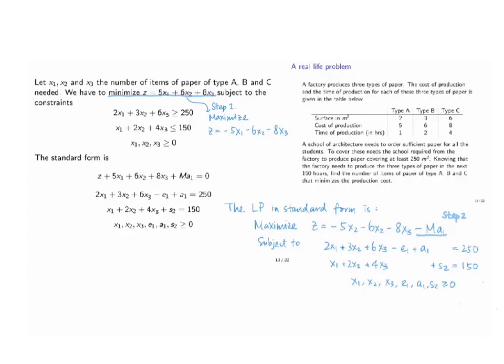We first convert the problem from a minimization problem to a maximization problem. So we would regard that we are now maximizing z equals negative 5x1 minus 6x2 minus 8x3 instead.